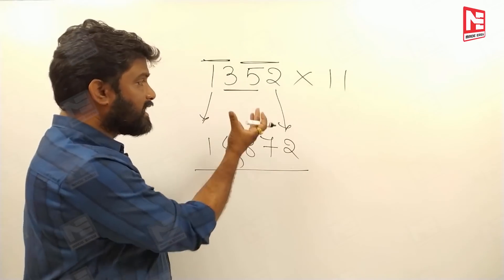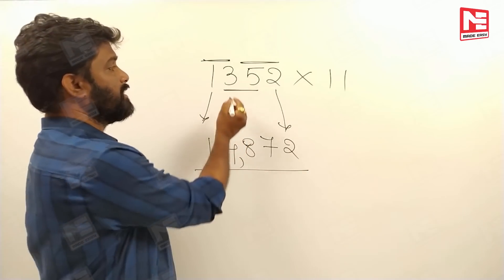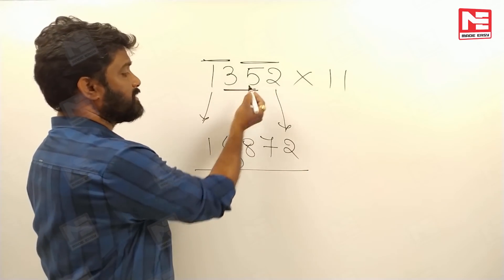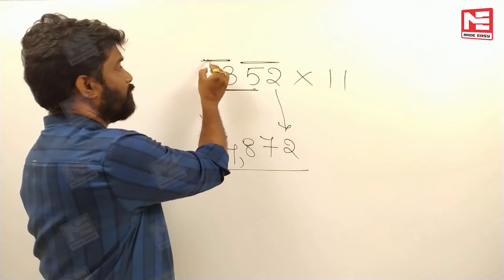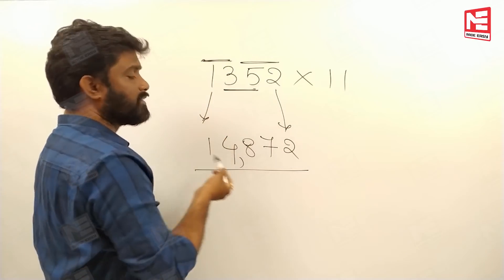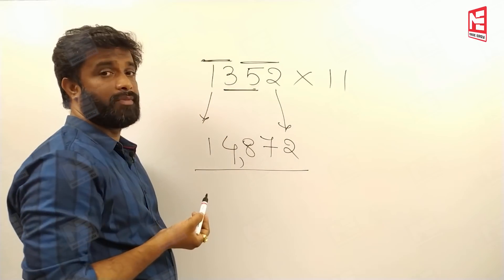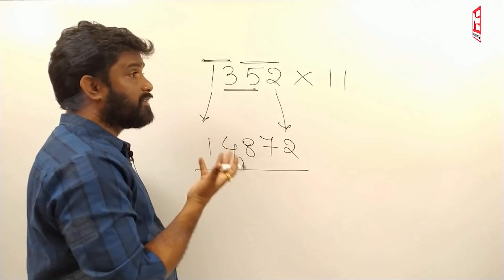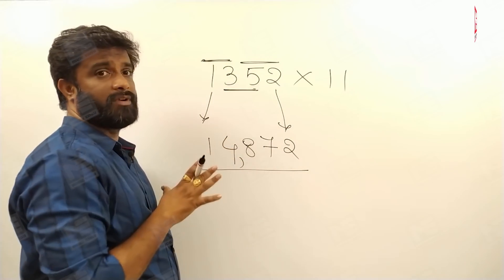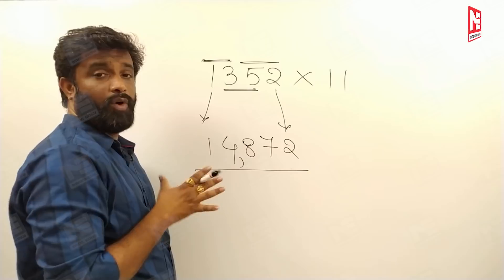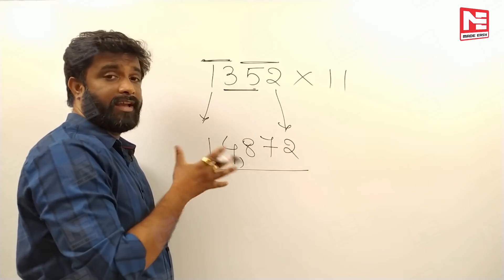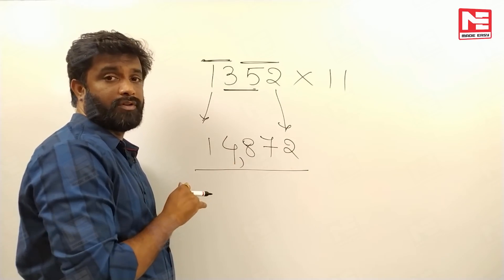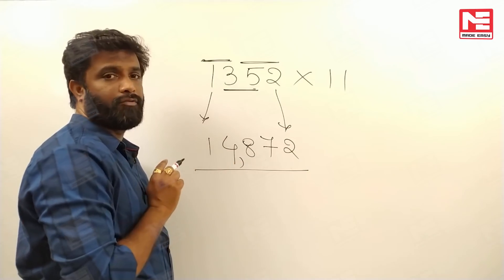Now you may have a doubt: in these calculations there were no carry forwards — every sum was a single digit, like 5 plus 3 is 8 and 1 plus 3 is 4. But sometimes you get a double-digit sum, and we need to handle carry forwards. Let's see that case now.